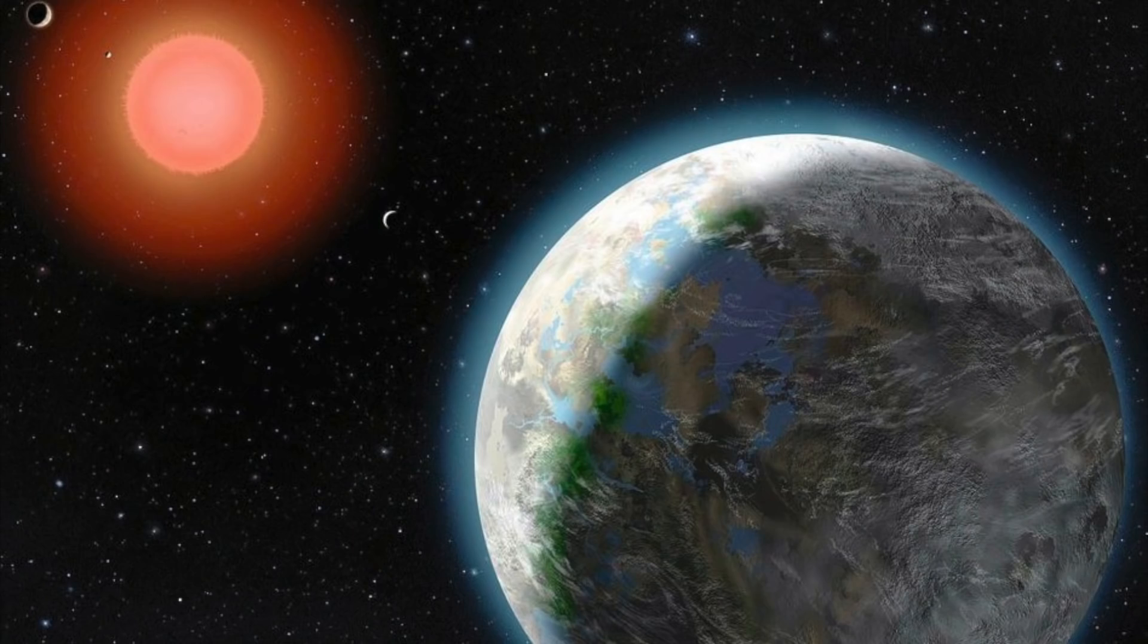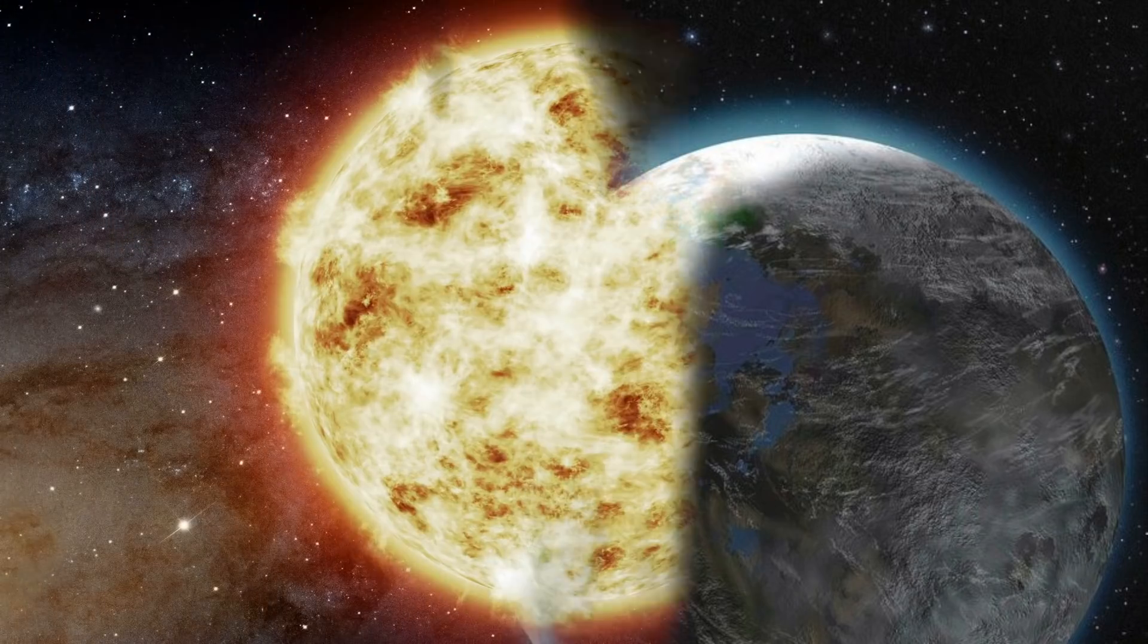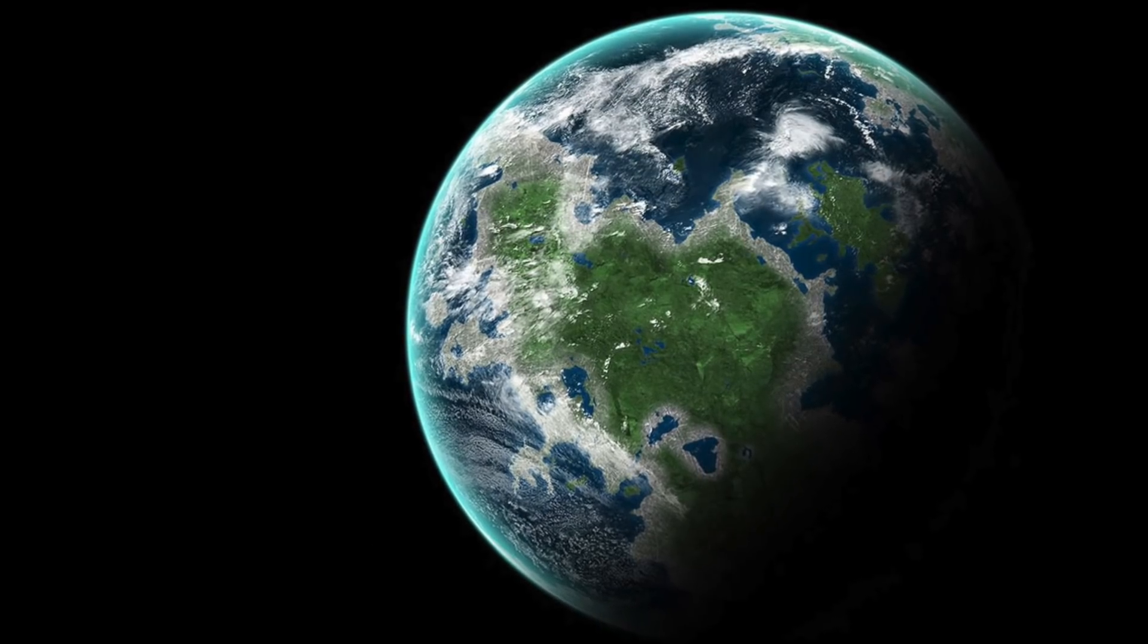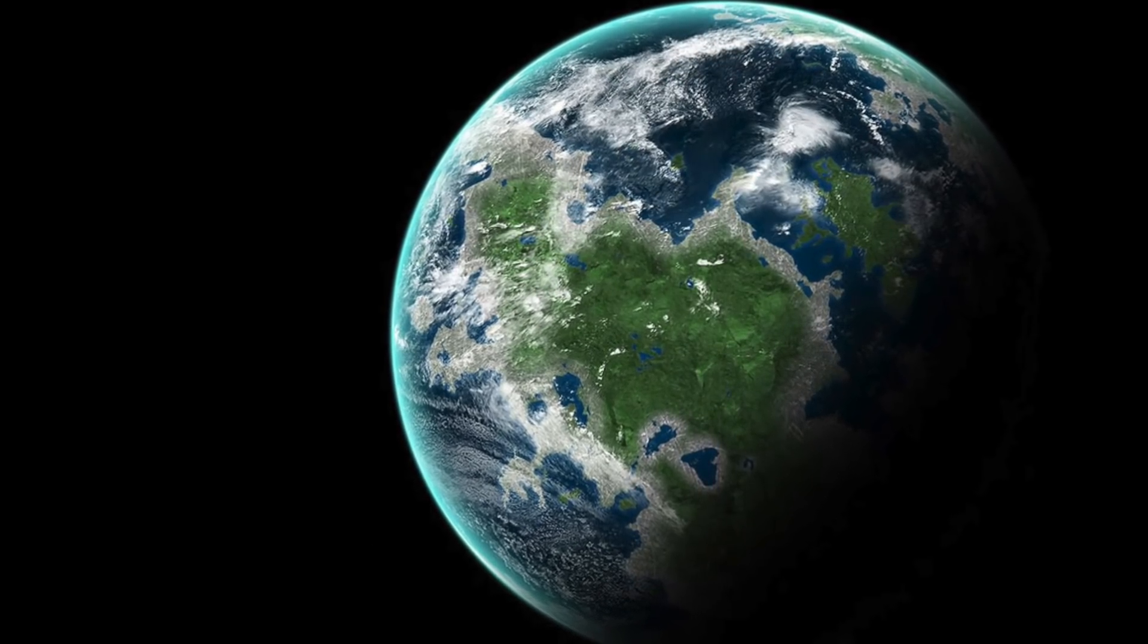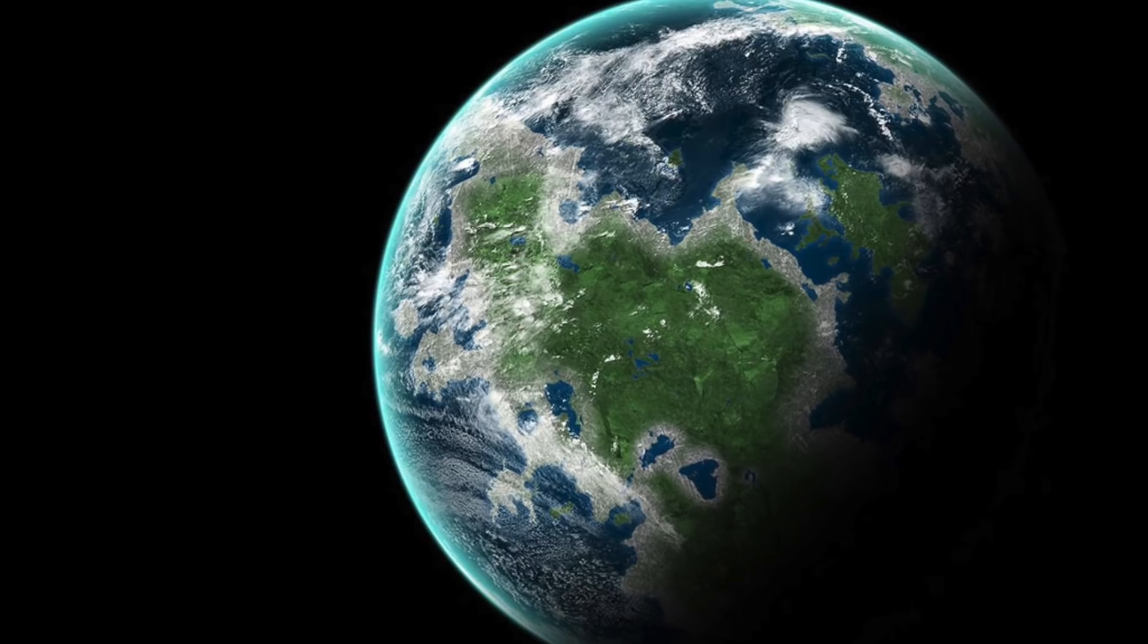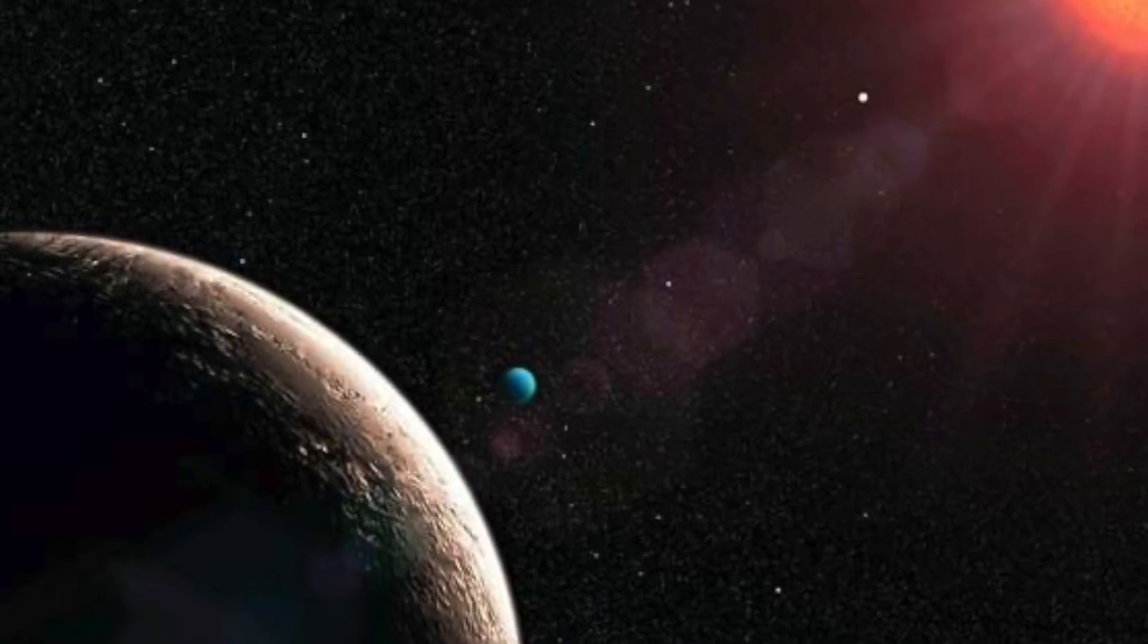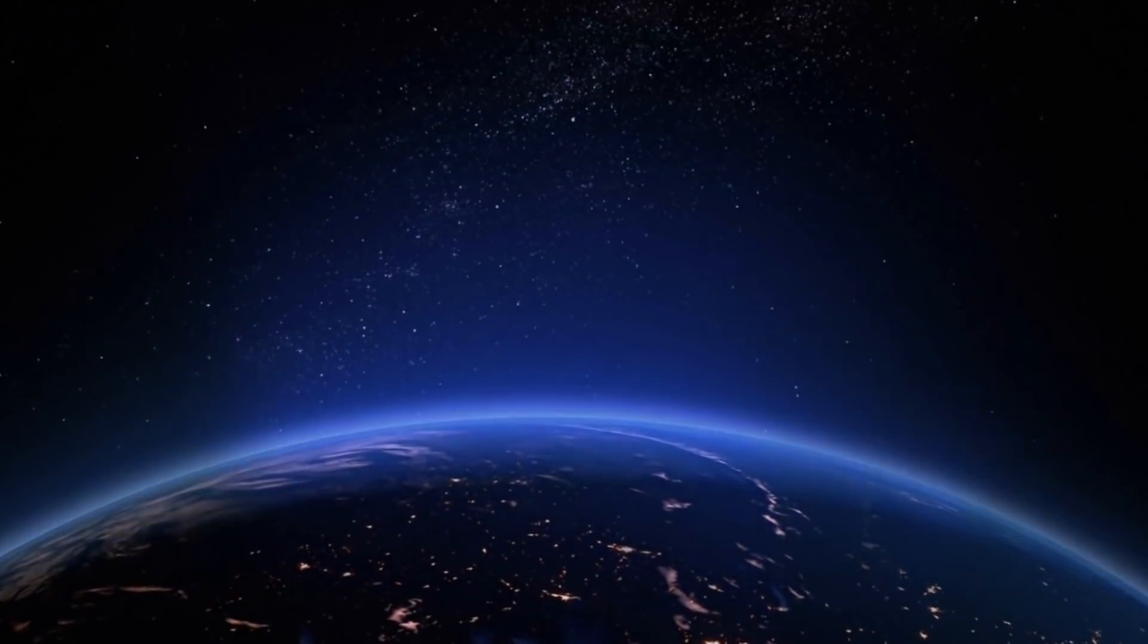Since this cosmic fixed point is a red dwarf, however, which exhibits only one-third of the mass of the Sun, it is still assumed that circumstances favorable to life prevail on Gliese 581g. According to this, the average temperature values on the planet's surface should be comparable with those on our home planet.